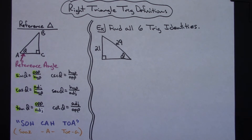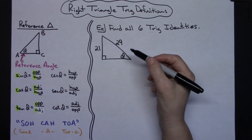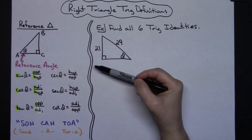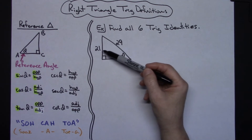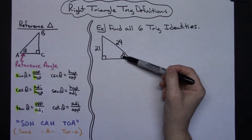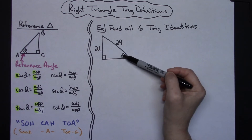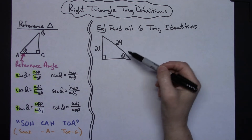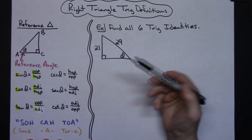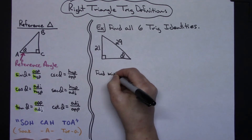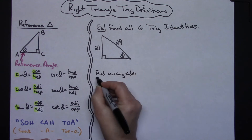If you don't have a reference chart or your trig identities, I would probably pause the video at this point and write those down. Here would be an example of just using your right triangle trig to come up with your six trig identities. They might give you a right triangle, tell you where your reference angle is, and in this particular case they've given me two sides but not the third side. So before I could proceed, I would need to find that third side using the Pythagorean theorem.